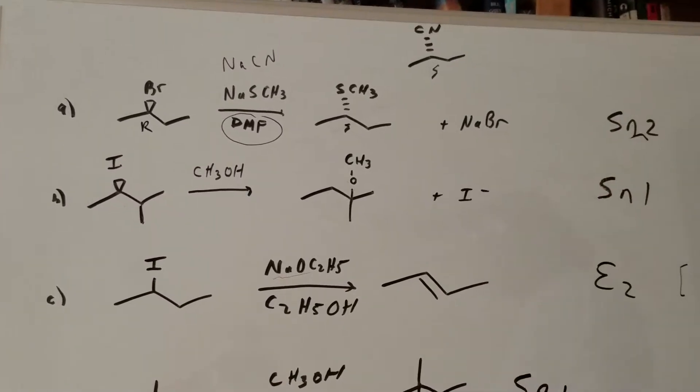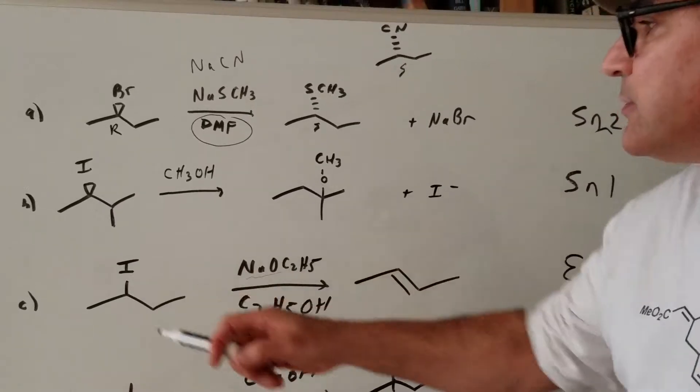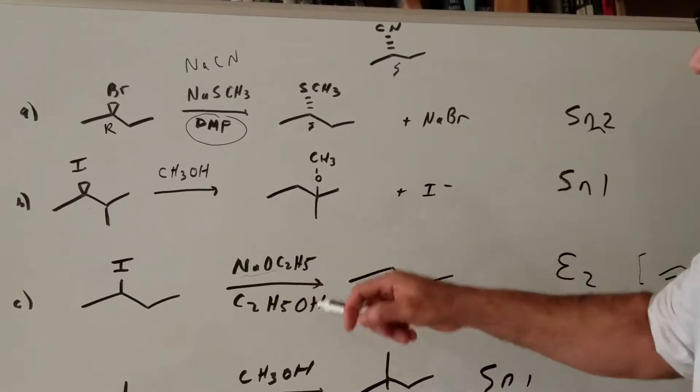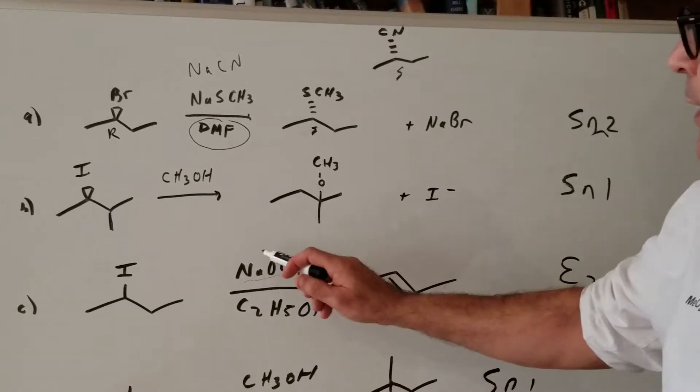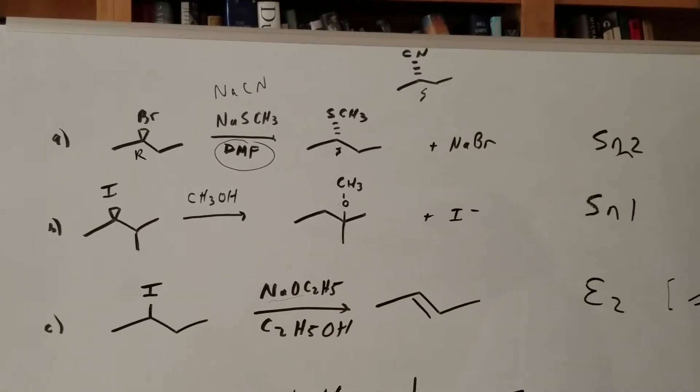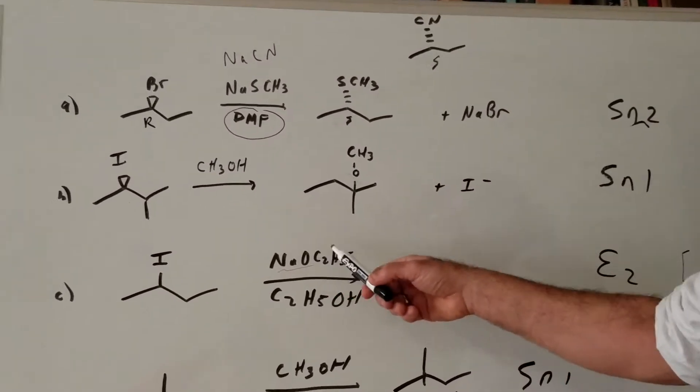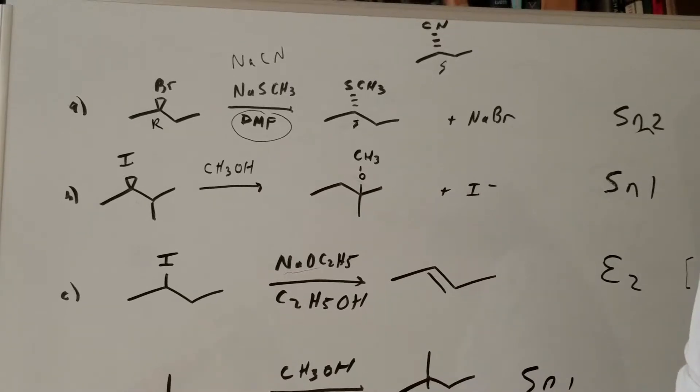In letter C, you have a secondary halide. And in the secondary halide, you're going to treat this with sodium ethoxide and ethanol, which is the favorite reagent for the DAT. Instead of sodium ethoxide and ethanol, it could have been sodium methoxide and methanol. Either way, this is a very powerful base. And because it's a powerful base, you're going to get an elimination reaction.